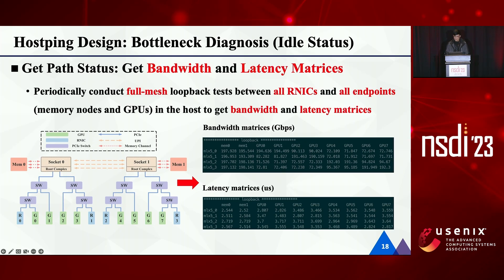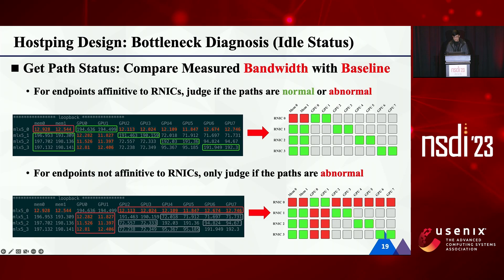I will first introduce how HostPing diagnoses the root cause of intra-host bottlenecks when the host is idle, meaning no tasks on the server. When the host is idle, HostPing periodically conducts full-match loopback tests between all R-NICs and all endpoints to get bandwidth and latency metrics. These endpoints include all memory nodes and all GPUs. In a server with the topology shown in the figure, we could get bandwidth and latency metrics by conducting full-match loopback tests. Then we compare the measured bandwidth with a baseline to judge the path status. The baseline value is collected on normal servers.